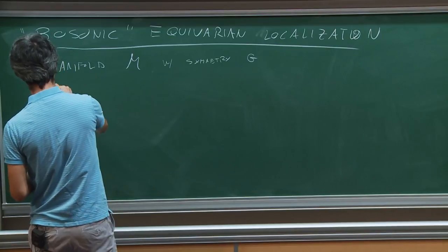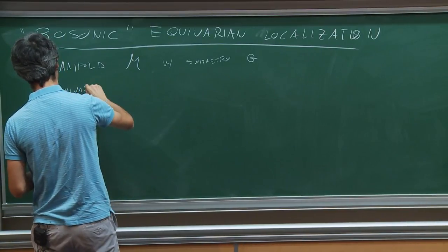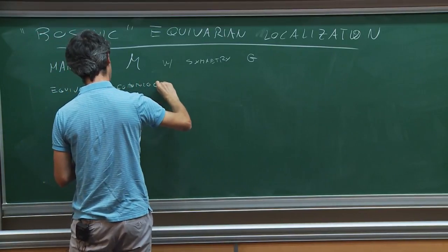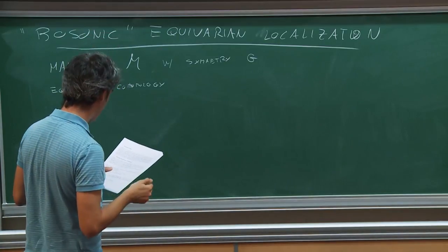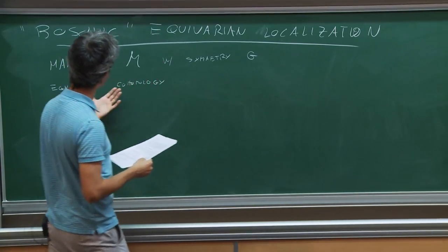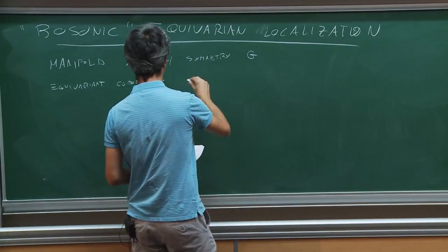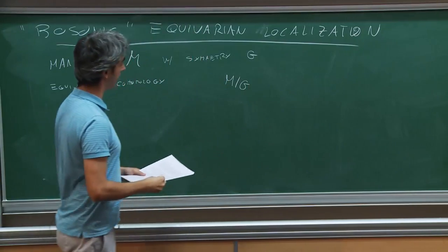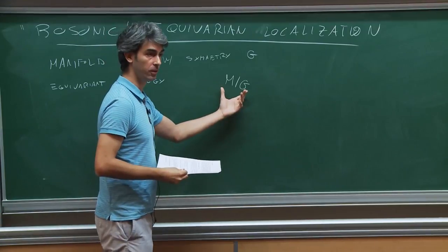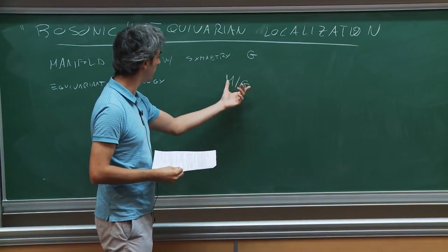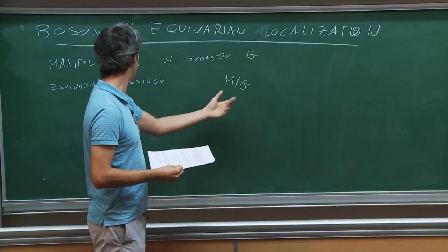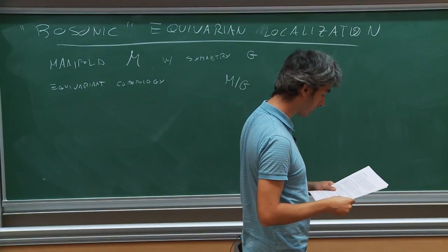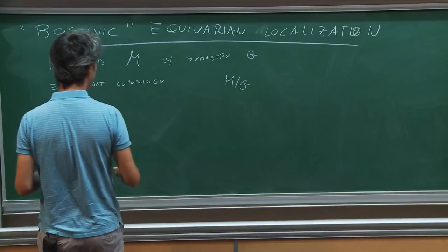Equivariant cohomology is in fact a generalization of what would be the cohomology of M mod G in the case in which this is not actually a smooth manifold. If this is a smooth manifold, one can define its cohomology. But when it is not, equivariant cohomology generalizes that concept to this situation. Let me focus on the case in which G is just U(1) — the simplest example.